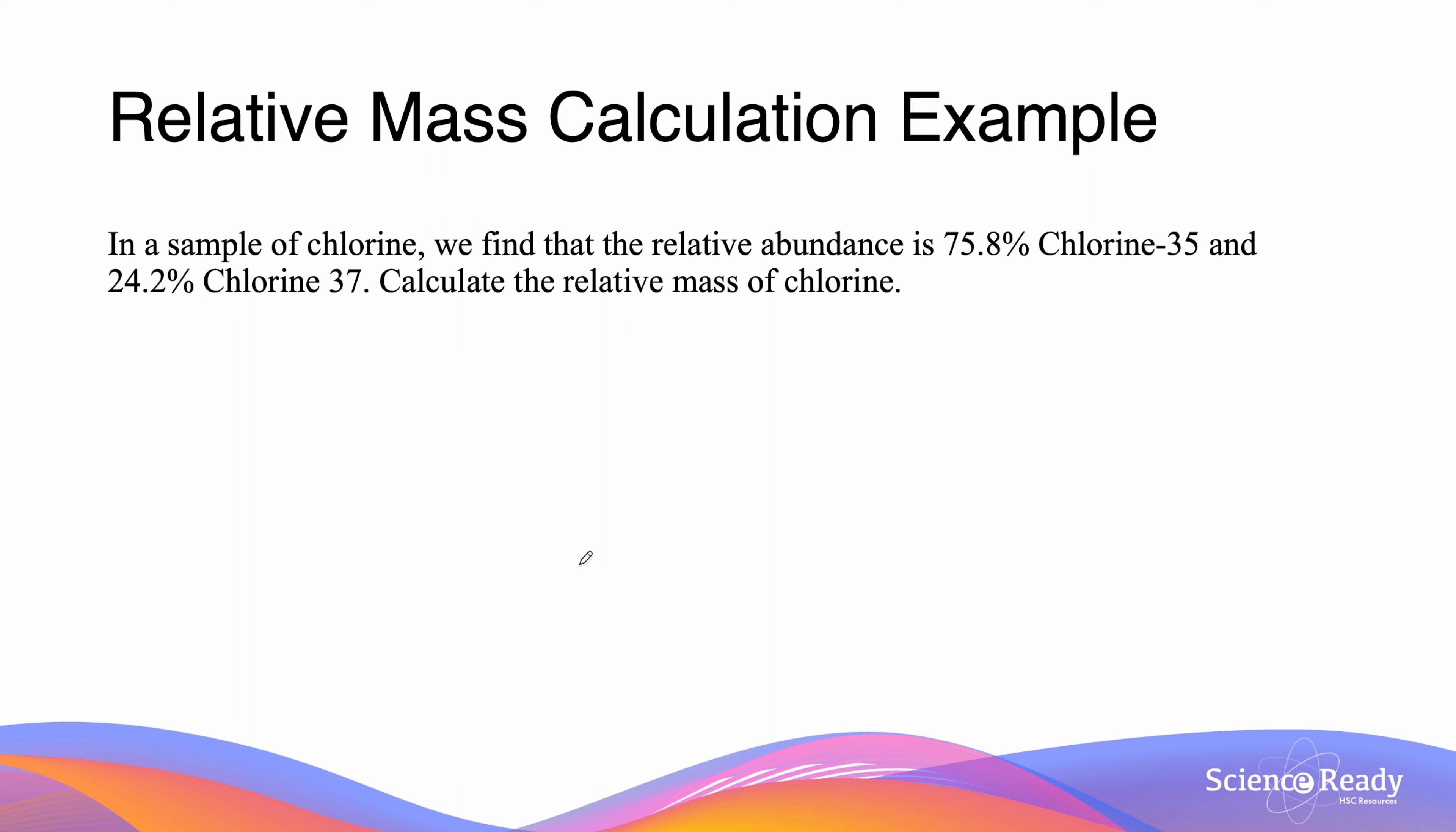Here we will do an example of a relative mass calculation. The question reads: In a sample of chlorine, we find that the relative abundance is 75.8% chlorine 35 and 24.2% chlorine 37. Calculate the relative mass of chlorine. So to do this, we take the relative abundance and multiply it by the relative masses of the isotopes.